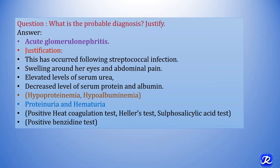Elevated level of serum urea is seen, which is indicative of kidney dysfunction. Decreased levels of serum protein and albumin indicate hypoproteinemia and hypoalbuminemia. Presence of protein and blood in the urine, indicated by positive heat coagulation test, Haller's test, sulfosalicylic acid test, and positive benzidine test — all these points favor the diagnosis of acute glomerulonephritis.